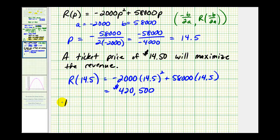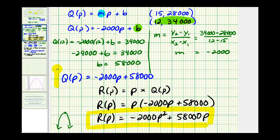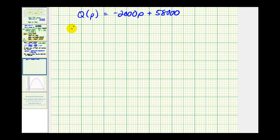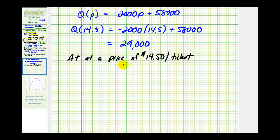The last question was how many tickets would be sold, which is Q of 14.5. Our quantity function is Q of P equals negative 2,000P plus 58,000. So Q of 14.5 equals negative 2,000 times 14.5 plus 58,000, which equals 29,000. At a price of $14.50 per ticket — the price that maximizes revenue — 29,000 tickets will be sold based upon this model.